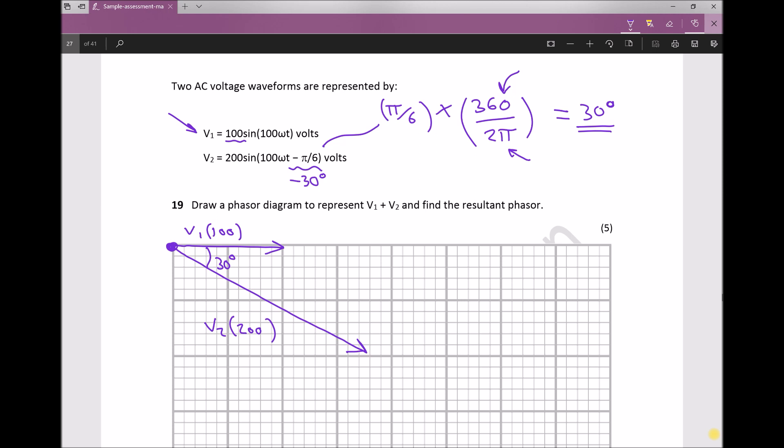To find the resultant, we turn our diagram into a parallelogram. This is one of the methods we use for vector addition. The resultant joins the start to the corner of the parallelogram. That line represents V1 plus V2. If drawing to scale, we could find the magnitude by measuring that line and the phase angle by measuring this angle.